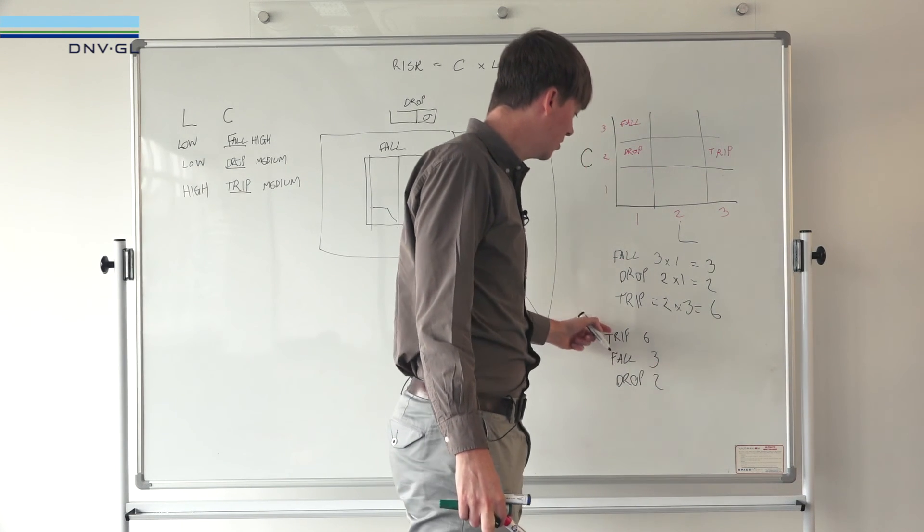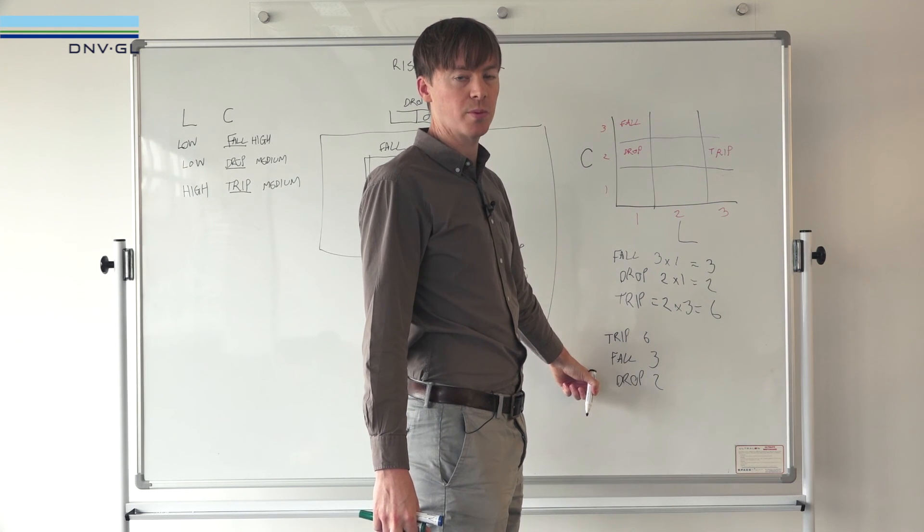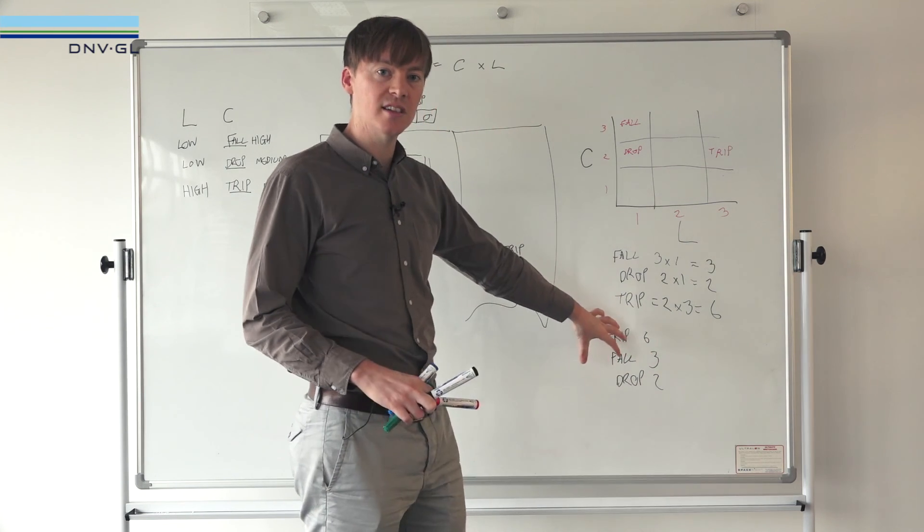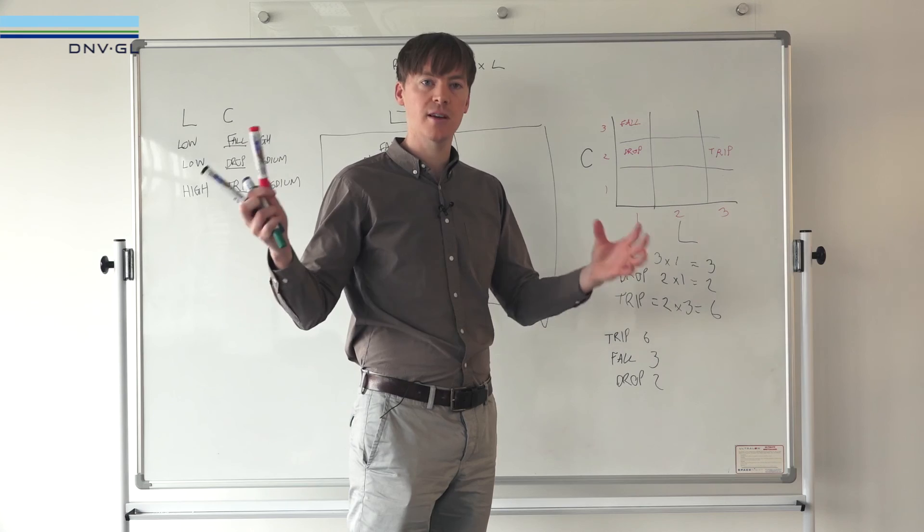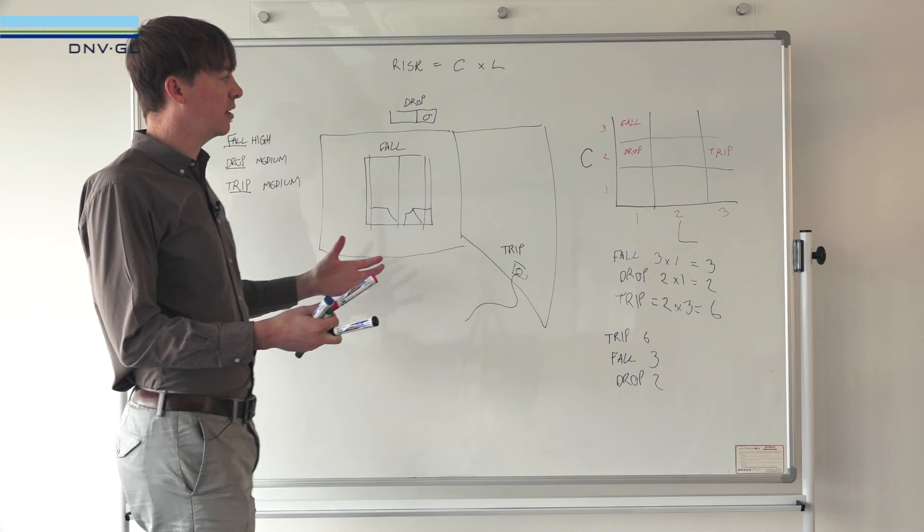The risk ranking of these would be trip with 6, then fall with 3, then drop with 2. You can see trip risk is twice as much as falling or three times as much as something dropping from the ceiling. The risk ranking gives you a completely different prioritization on how you should spend your time managing hazards versus a hazard ranking, and that's fundamentally the difference.